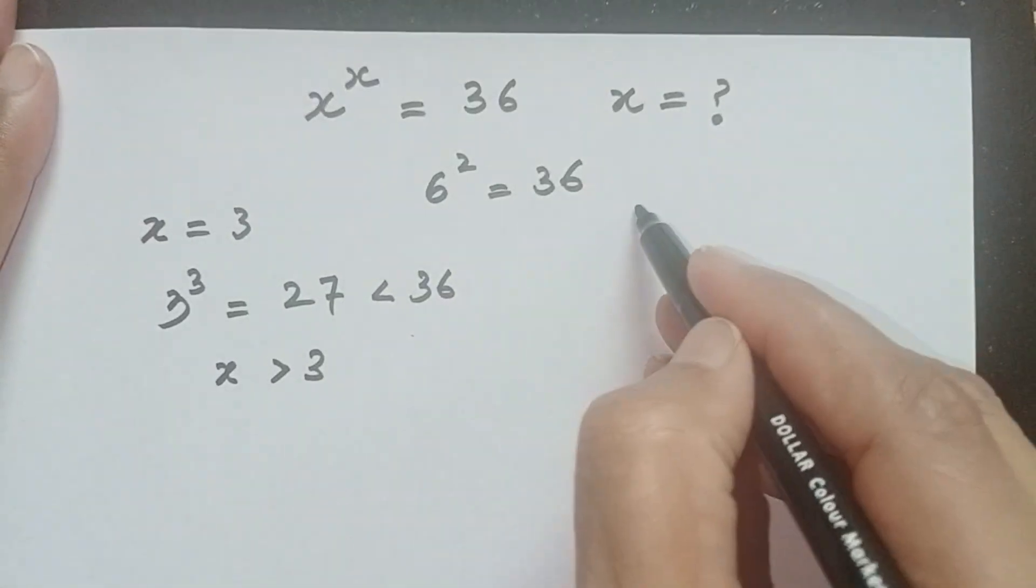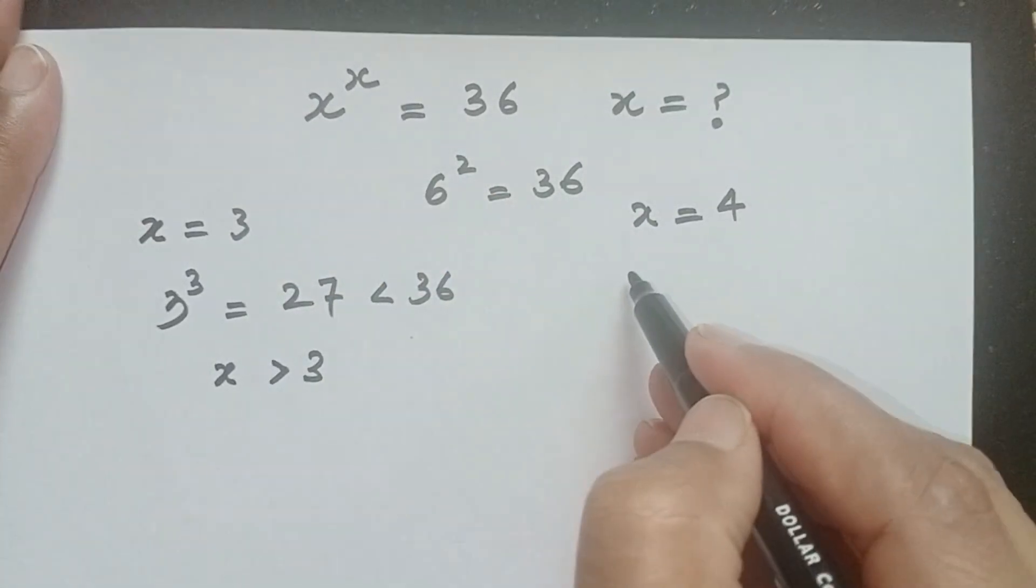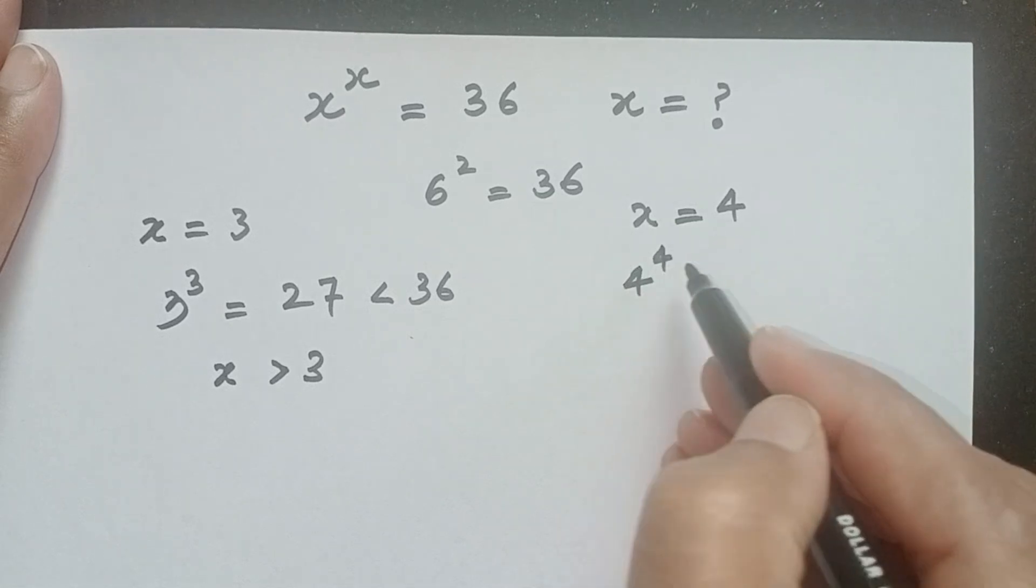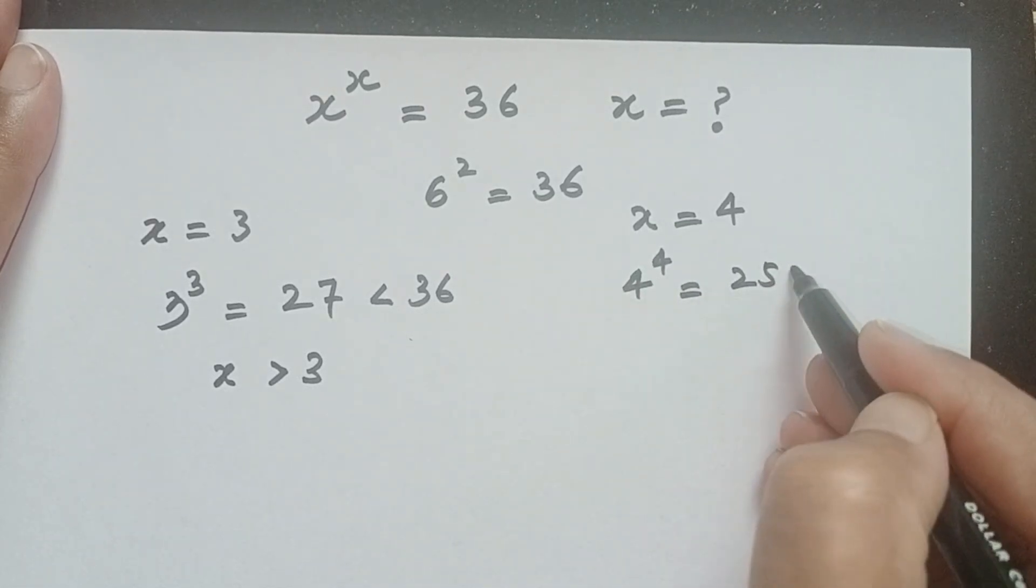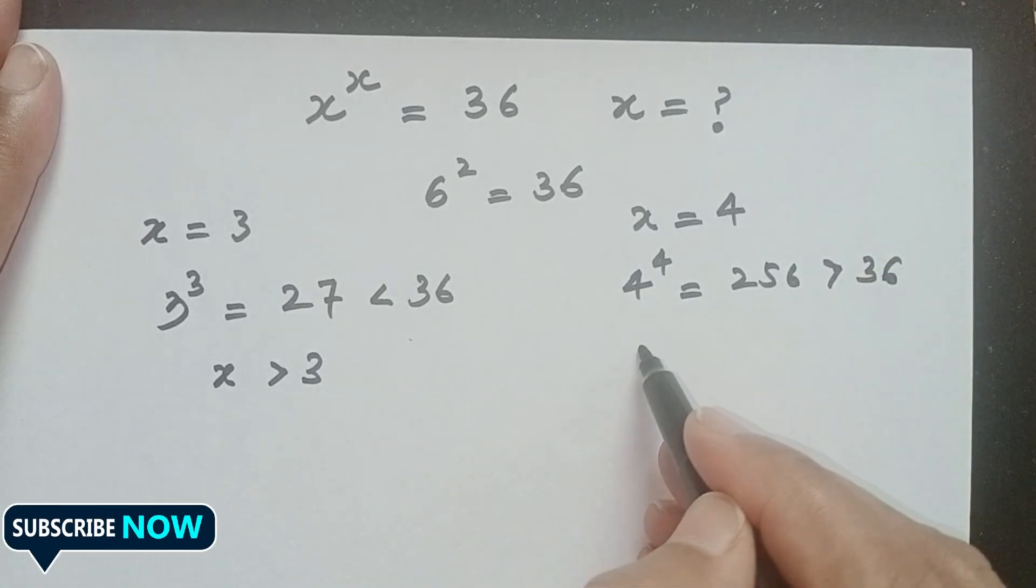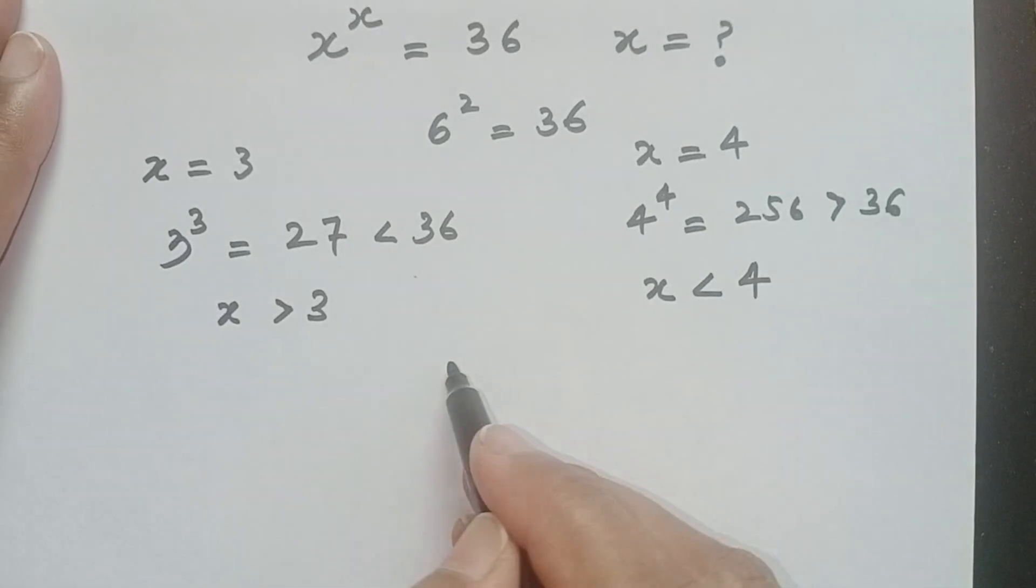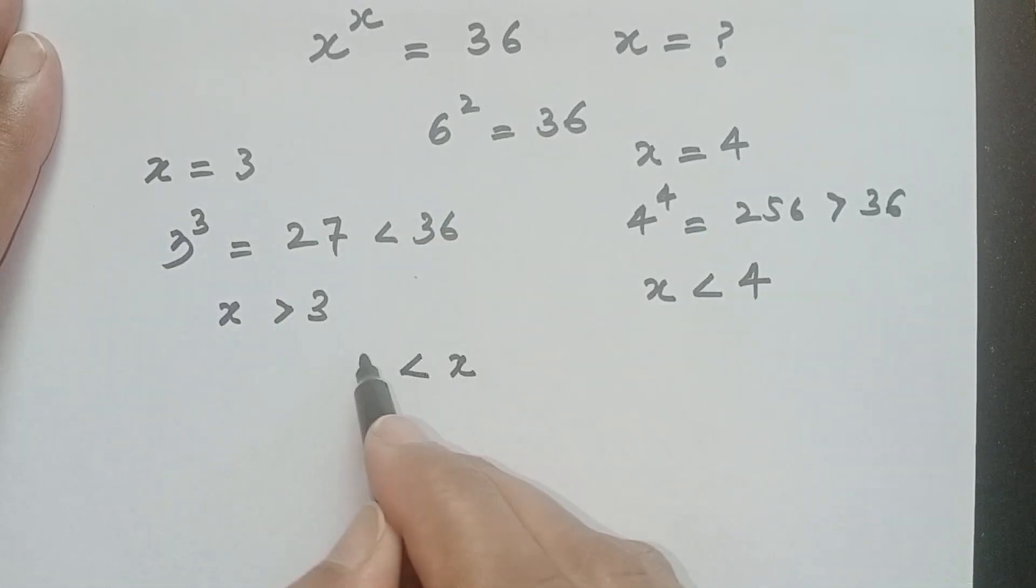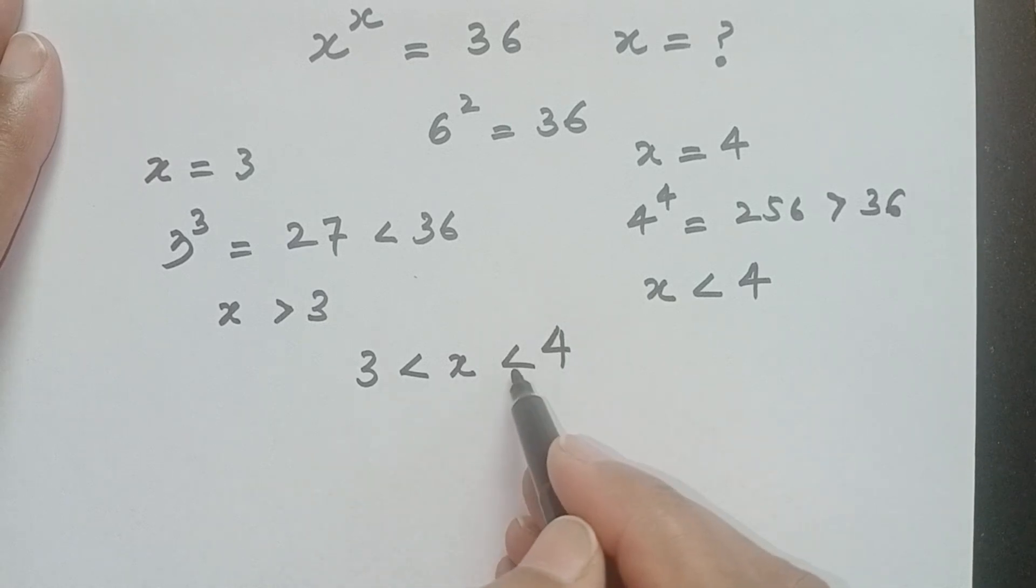So if x is equal to 4, then according to this equation, 4 power 4 is equal to 256, which is greater than 36. So it means x is less than 4. So x lies between 3 and 4, because x is greater than 3 but less than 4.